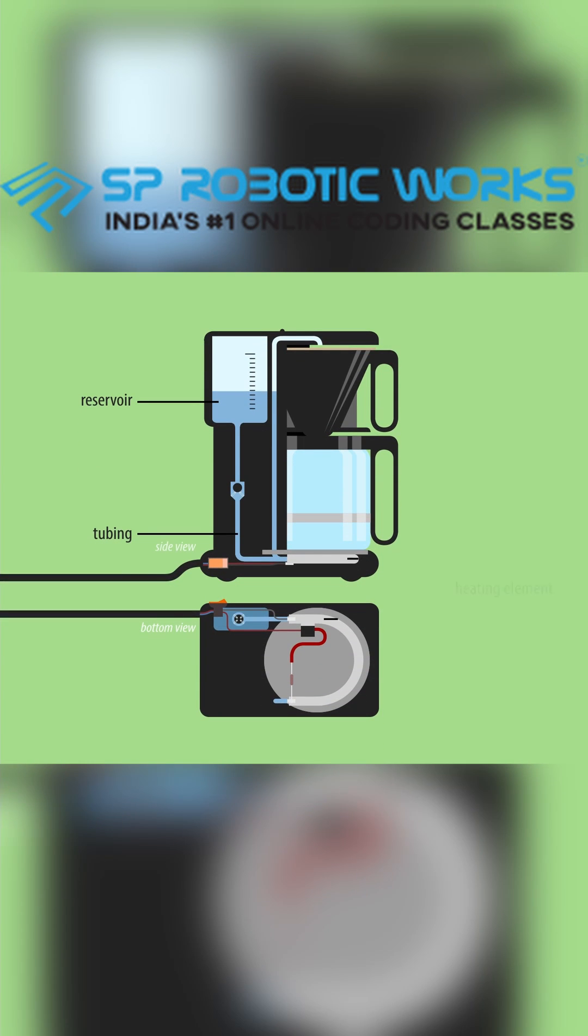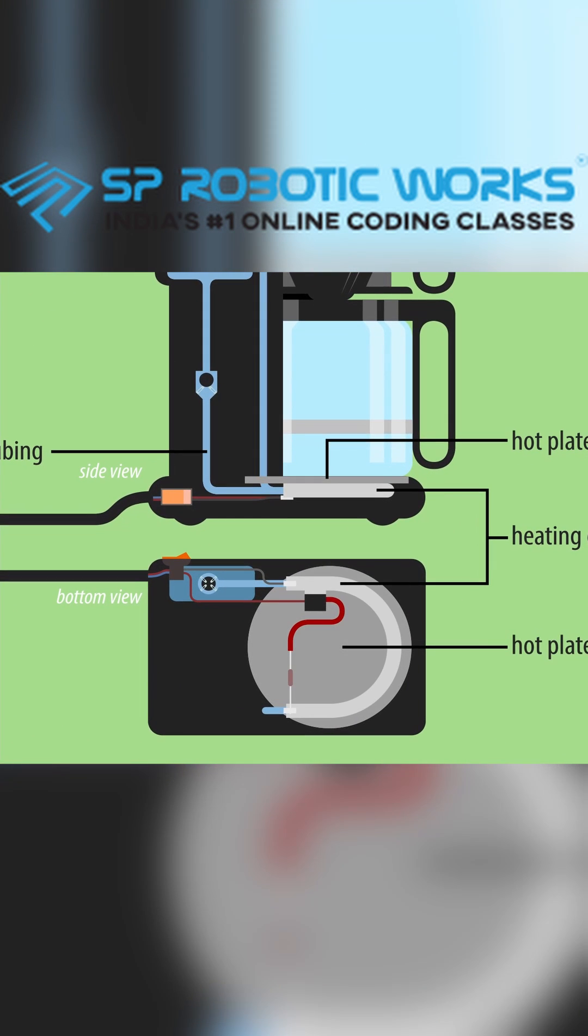The tubing runs past the heating element, which is responsible for both heating the plate the pot sits on, and heating the water.